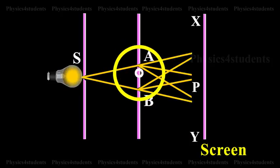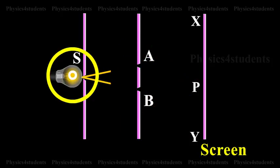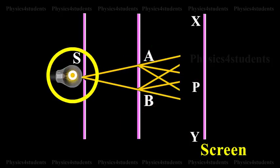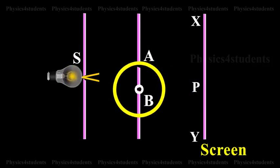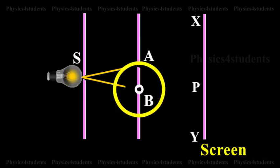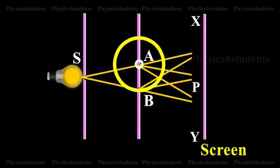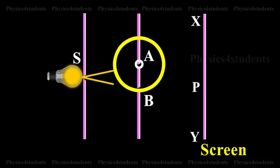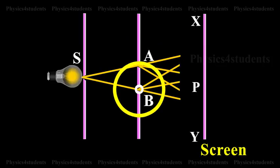Since A and B are equidistant from S, light waves from S reach A and B in phase. So A and B act as coherent sources. According to Huygens' principle, wavelets from A and B spread out and overlapping takes place to the right side of AB.